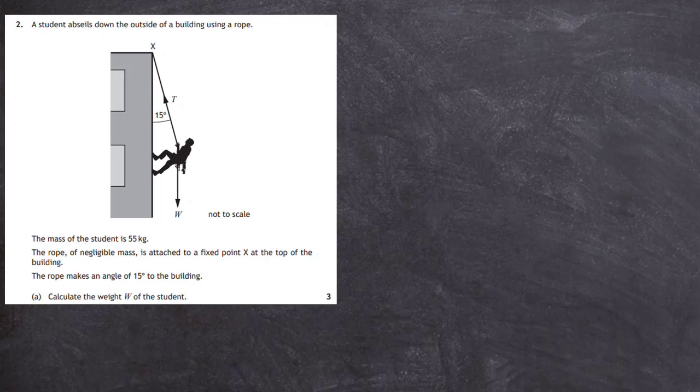Question 2 from section 2 of the 2019 Higher Physics SQA exam. A student abseils down the outside of a building using a rope as shown in the diagram. The diagram is not drawn to scale.